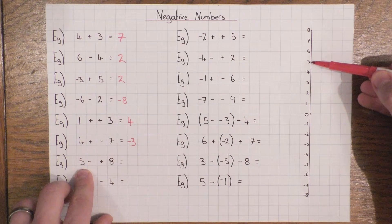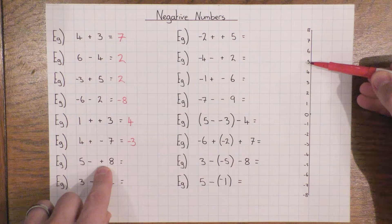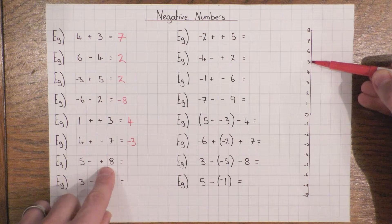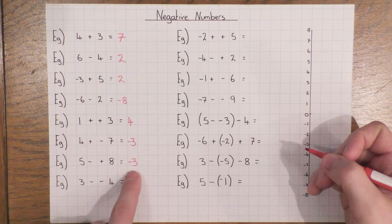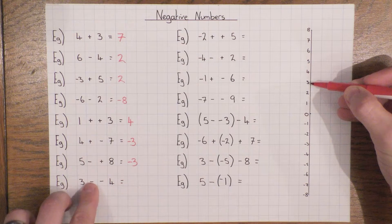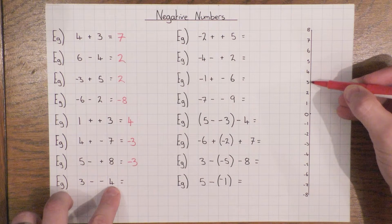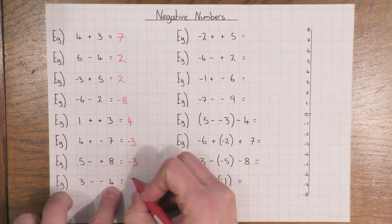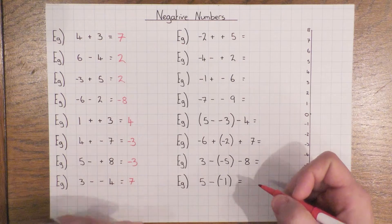For five minus positive eight: I'm taking away coal, so throwing away something hot means my temperature goes down. I start at five, go down eight, and land on minus three. And this is probably the most common one where people make mistakes: three minus negative four. I'm taking away four ice cubes, so if I throw ice cubes away my temperature increases — I start at three, go up four, to get seven. That's why taking away a negative ends up adding: remove the ice cubes and the temperature goes up.